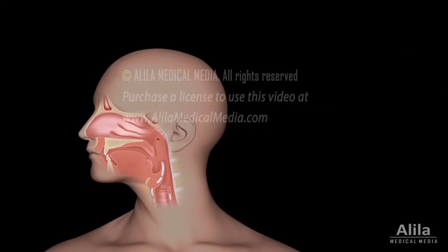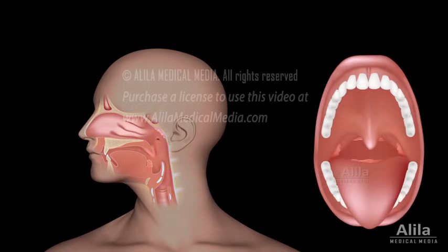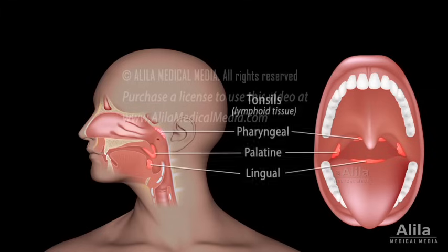From the nose, inhaled air turns 90 degrees downward as it reaches the pharynx. This turn is another trap for large dust particles, which, because of their inertia, crash into the posterior wall of the throat and stick to the mucosa. The pharynx houses several tonsils — immunocompetent tissues of the immune system that are well-positioned to respond to inhaled pathogens.